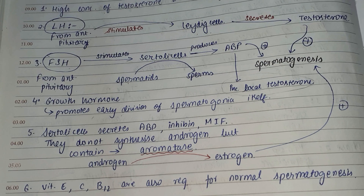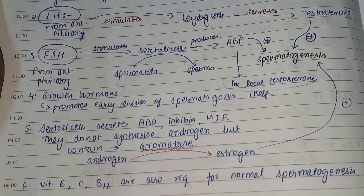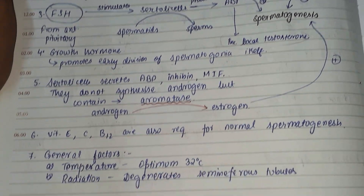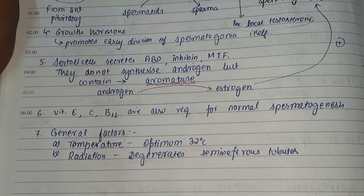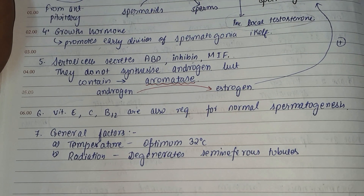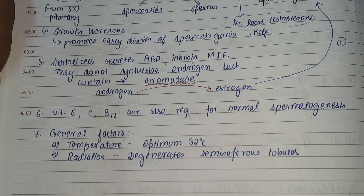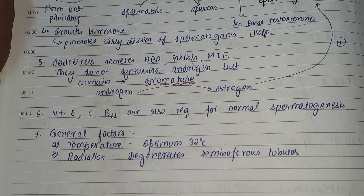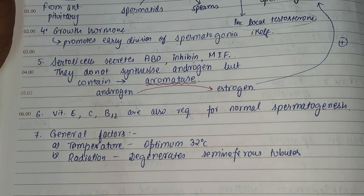Estrogen helps in concentration of the sperm fluid. Certain vitamins like E, C, B2, and L are also required for normal spermatogenesis. Several general factors also play a role, such as temperature — the optimum temperature is 32 degrees Celsius — and radiation, which degenerates the seminiferous tubules. Thank you for watching.